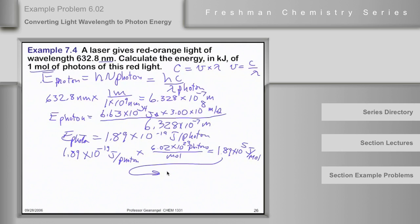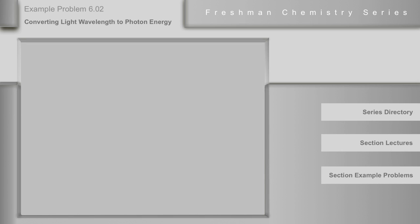Or, convert that to kilojoules, it's 189 kilojoules per mole of photons. Questions?